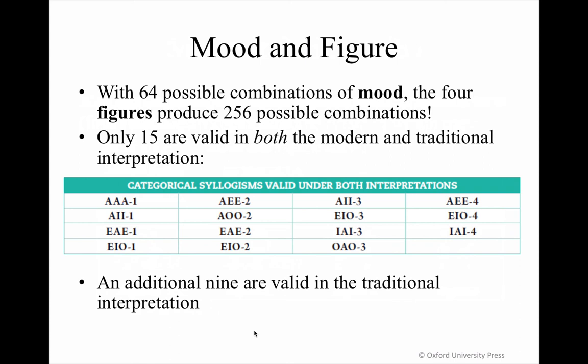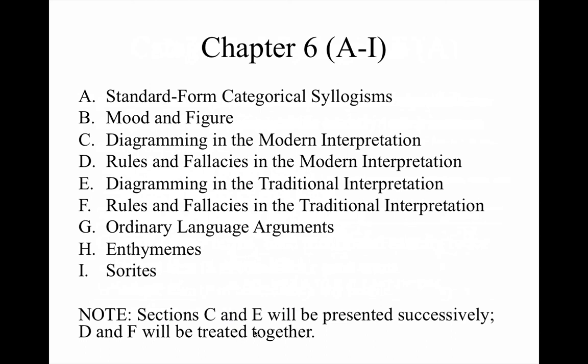This is a handy chart that will tell you which categorical syllogisms are valid under both interpretations — the modern and the traditional interpretation of the universal claim. For example, any argument with mood and figure AAA-1 is valid on both interpretations. You now understand what a categorical syllogism is, what it means to organize your argument in standard form, and what an argument's mood and figure are. Next, we'll move on to techniques for testing an argument for validity on both the modern and traditional interpretation of the universal claim.